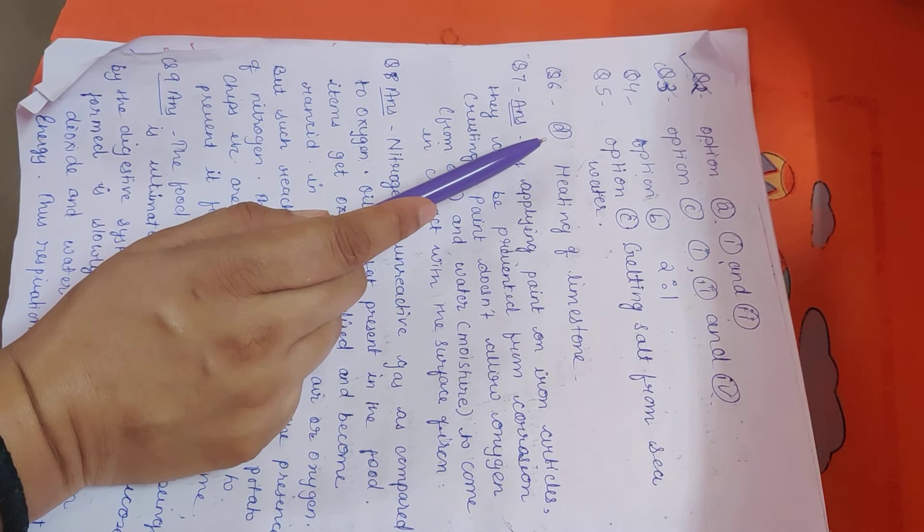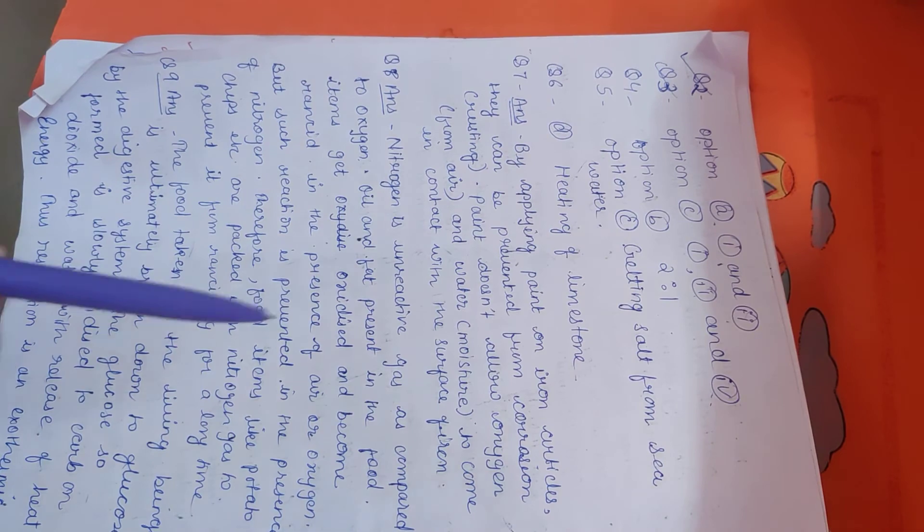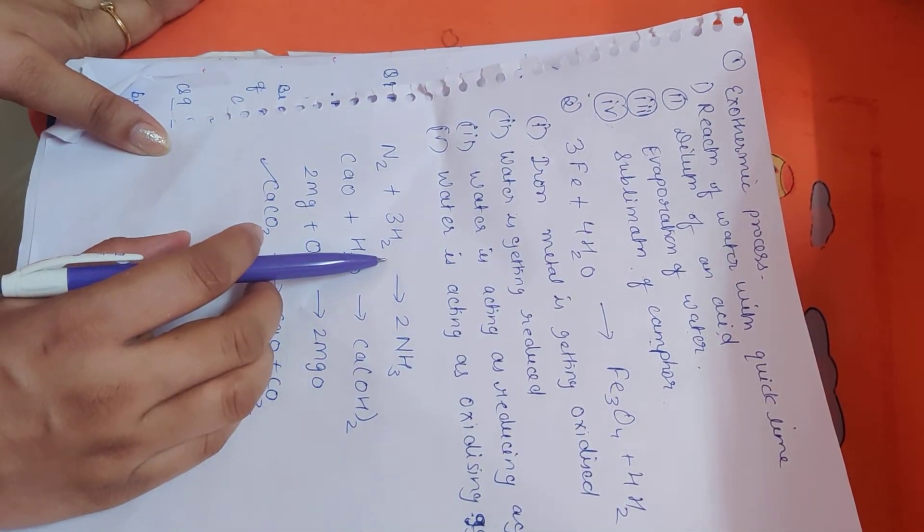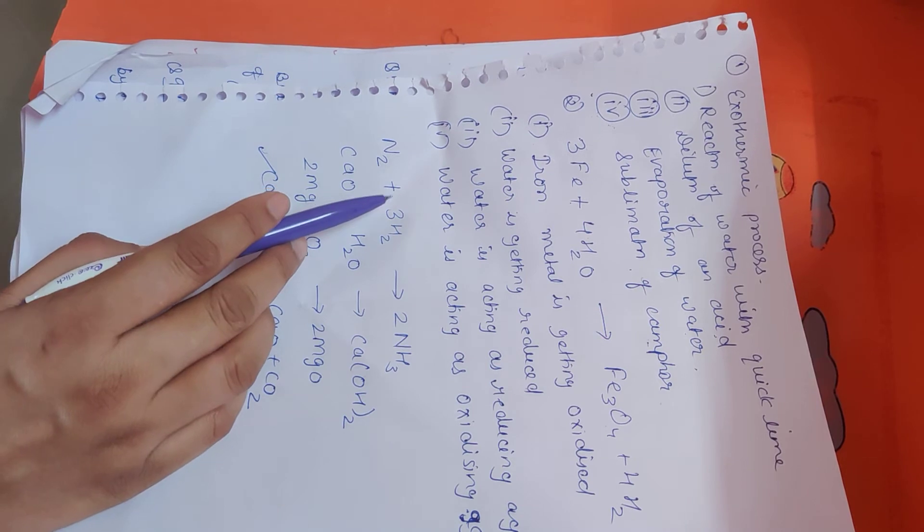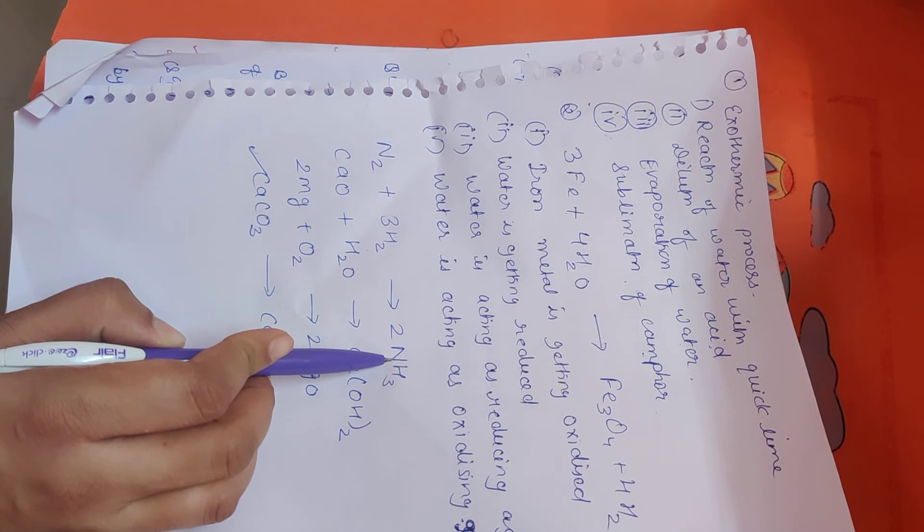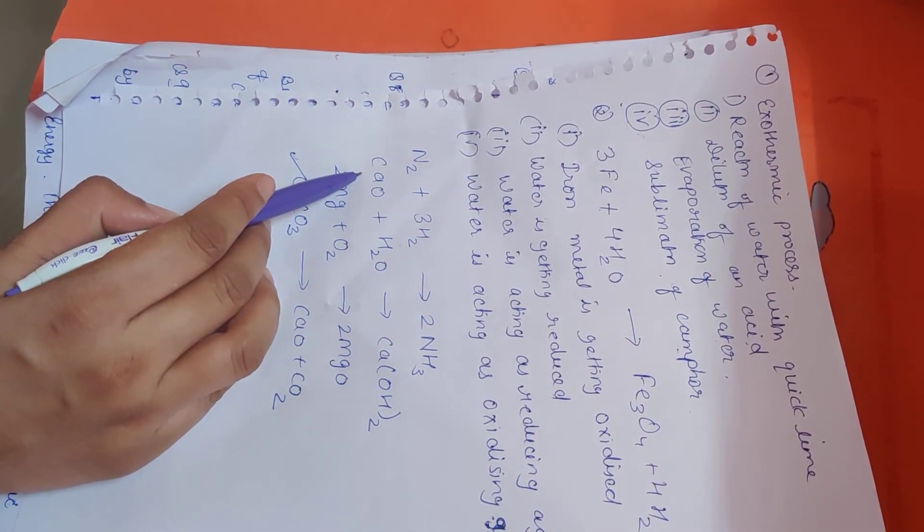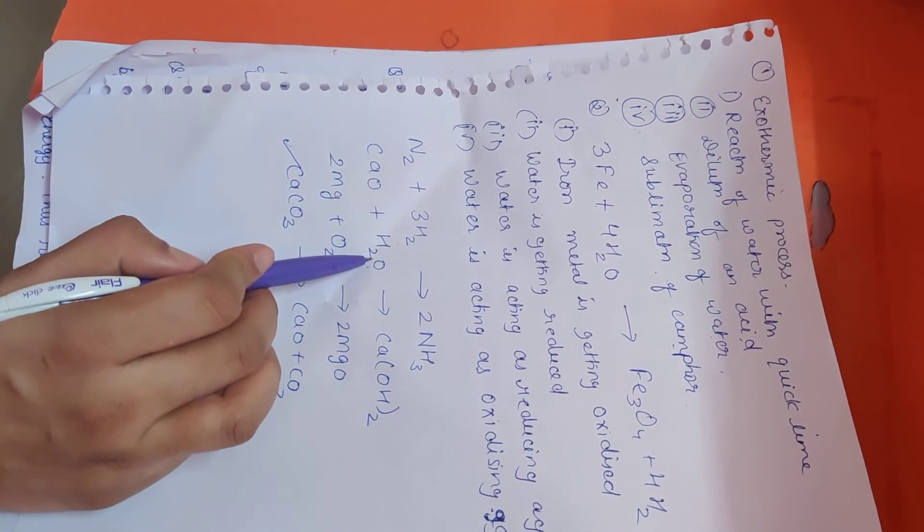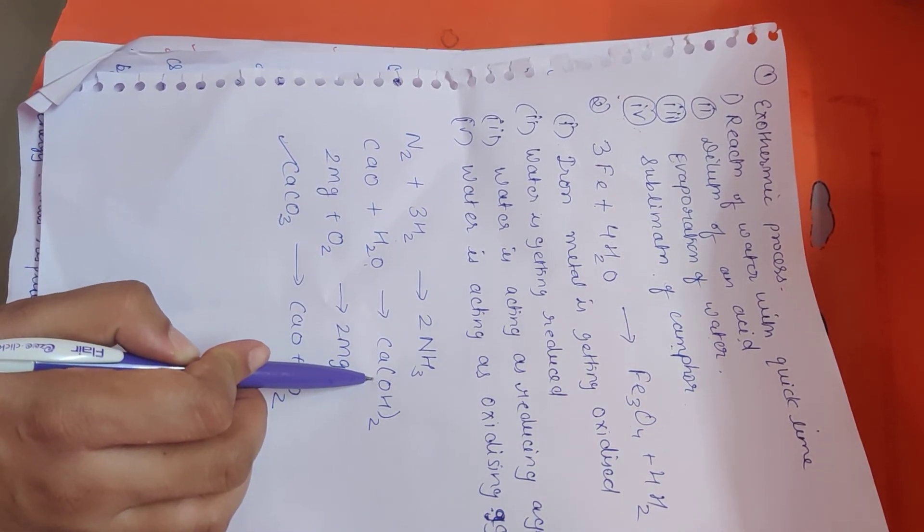So the next question is, what is the following is not a combination reaction. You know students, in combination reaction, two reactants combine and form one product. So in this first option, the reaction of hydrogen with nitrogen, it combines and forms ammonia, so it's a combination reaction. Next is reaction of quicklime with water, it also forms... again, two reactants are there, forming a single product, that is calcium hydroxide. It is also a combination reaction.